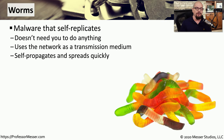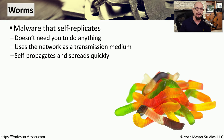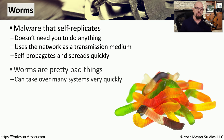A traditional virus requires an end user to click on an executable and start the process. But a type of virus that doesn't need any user intervention is a worm. A worm takes advantage of a vulnerability in operating systems or applications to move itself from system to system without requiring any user intervention. Worms take advantage of our network and internet connectivity to move very quickly and easily from computer to computer — it's not unusual for hundreds of thousands or even millions of systems to be infected in a very short period of time.